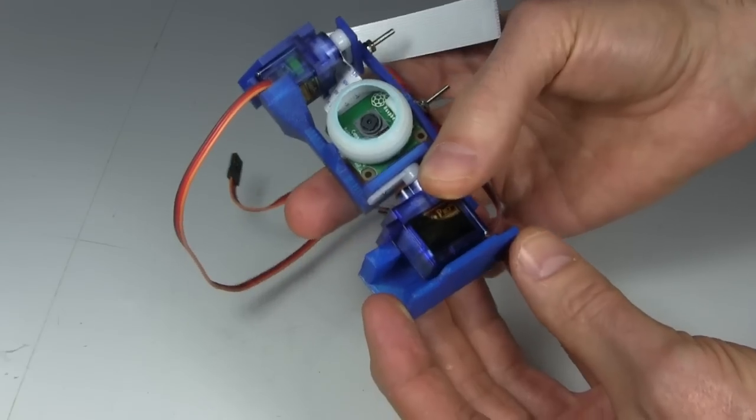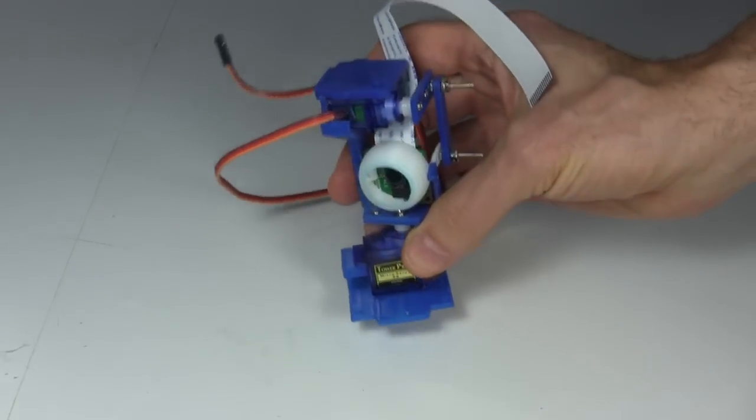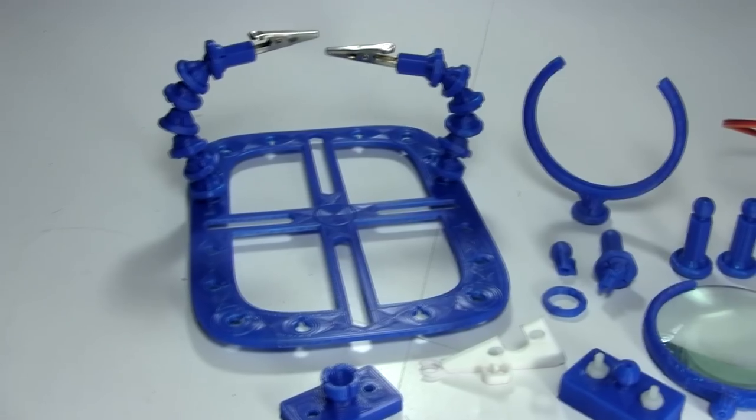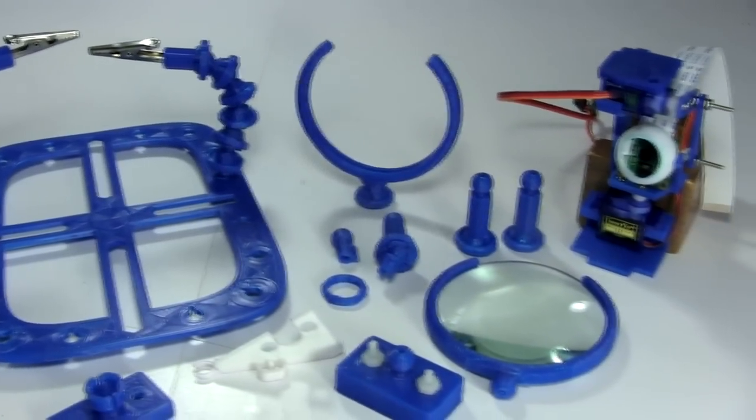And here's the finished part. It's a temporary base for a Pi camera eyeball that I designed and printed. As you see, I've printed many parts with this printer without a single problem.